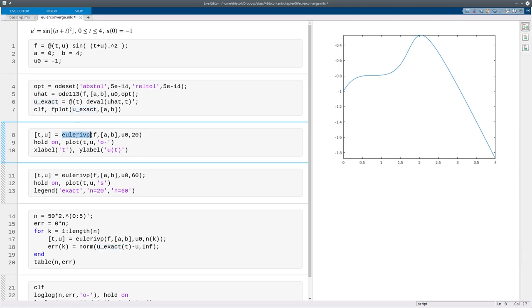Alright, so here I'm going to call the book's function for Euler's method. It has the same inputs and outputs as the MATLAB functions, except it has an additional input, which is the number of steps to take.